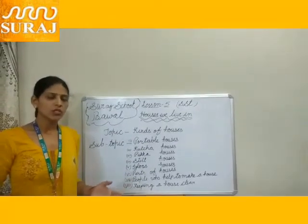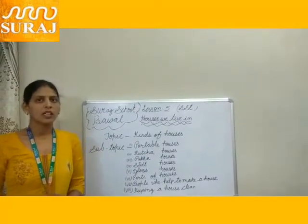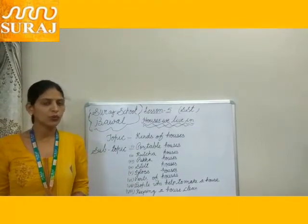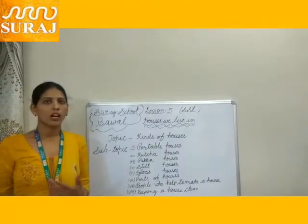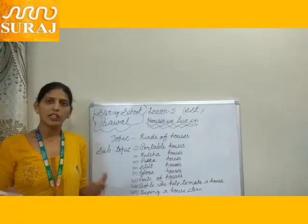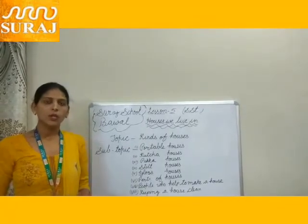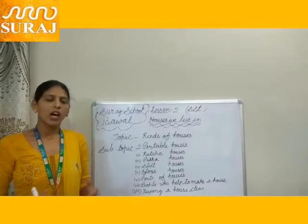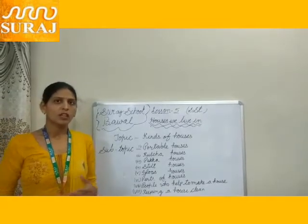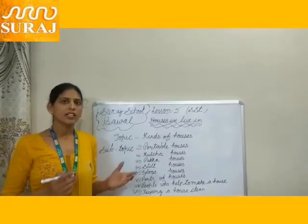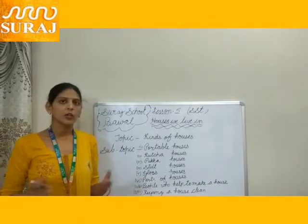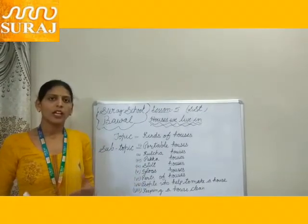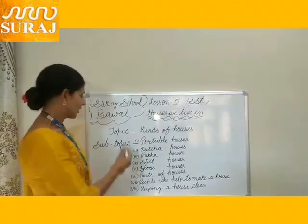Earlier, people did not stay at one place. They used to roam around to find food. They did not have houses. They lived in caves. Today we all need a house for living. Houses protect us from bad weather like heat, cold, and rain. It keeps us safe from animals.